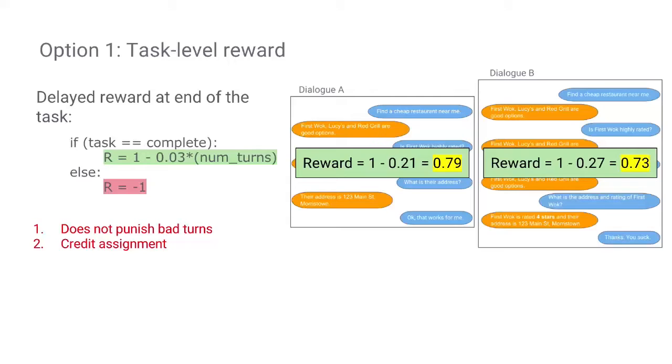There is an issue of credit assignment because the reward is given at the end of the dialogue, so the dialogue manager needs to do a lot of exploration to figure out the correct sequence of moves that would optimize the reward. This is also brittle because the notion of task completion is unclear if the dialogue has gone through a trajectory not covered by the system designer's definition of task completion.